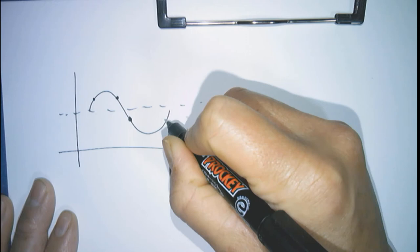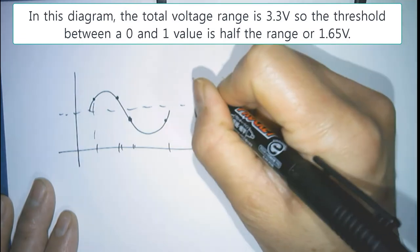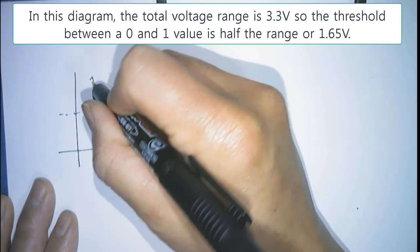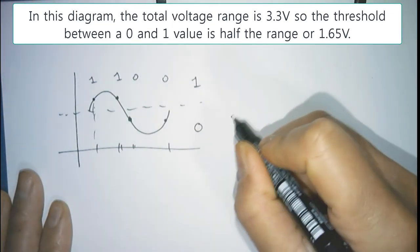One way to do this is to run it through the simplest analog-to-digital converter, which would be a 1-bit ADC. This simply means we divide our voltage range in half, and any sample above our threshold voltage gets a value of 1, and any below gets a value of 0.